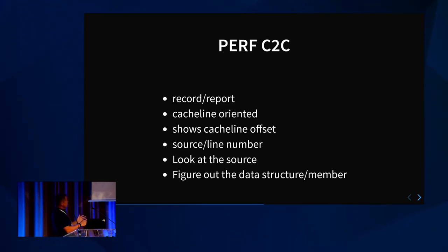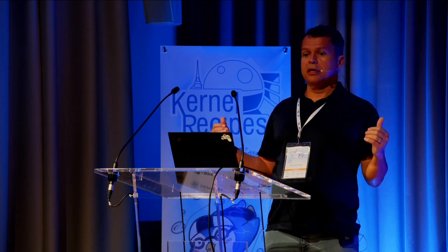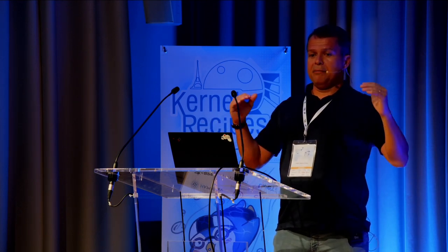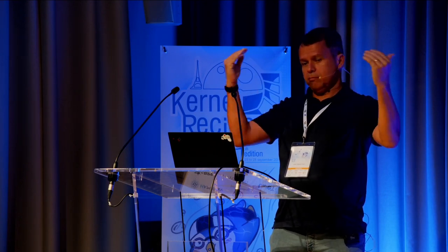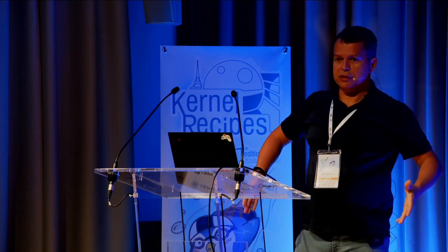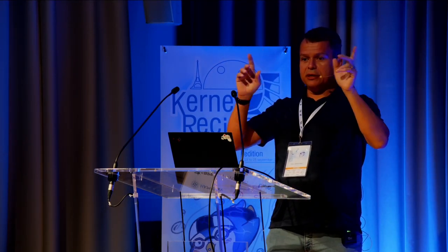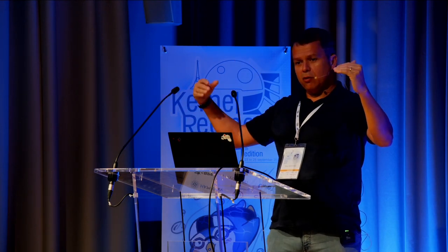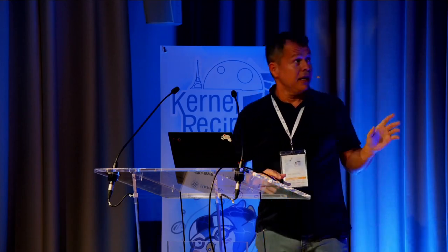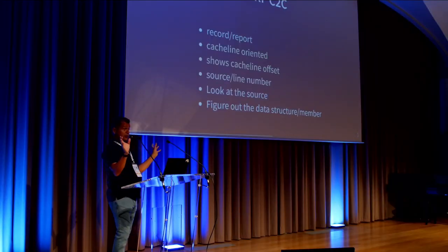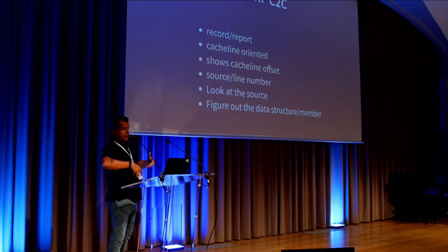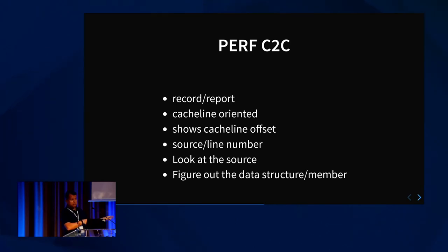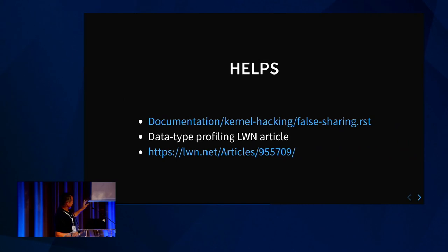Perf C2C also has a record/report oriented to cache lines. It tries to help you identify data structures that are being constantly evicted from the cache. For multi-threading: you have multiple CPUs accessing the same cache line, one of them writing, the others reading. The one that's writing makes the ones that are reading always fetch from memory because it's changing the line. You change the layout of the data structure, run again or run your benchmark — does it improve? There's documentation in the kernel hacking docs and an LWN article with examples.